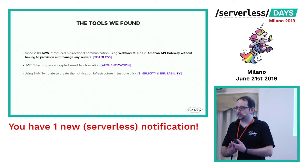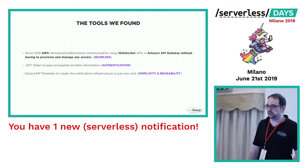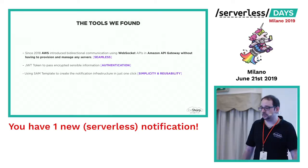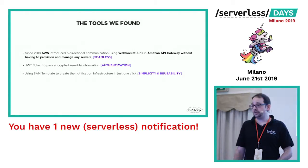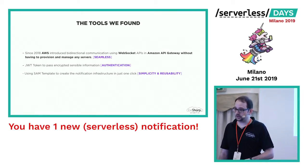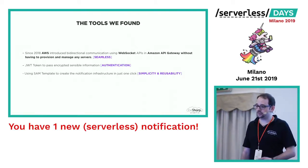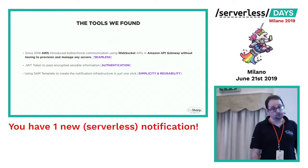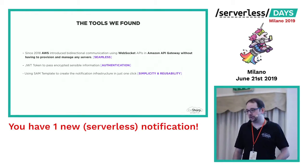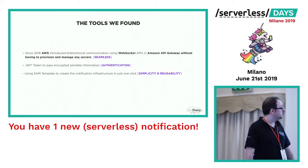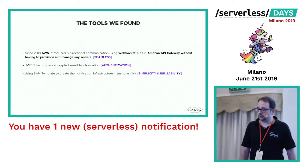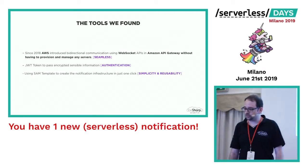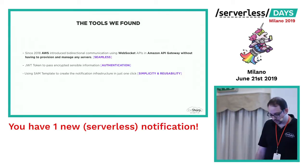Our main area of expertise is AWS, so we searched in AWS and found that in 2018, AWS released a WebSocket API for API Gateway, which was perfect for us because it's managed by AWS itself. It's very simple to integrate into an already existing application. We also used a JWT token to pass encrypted information, and we used a SAM template to make it possible to release this infrastructure with just one click, making it very simple to reuse.